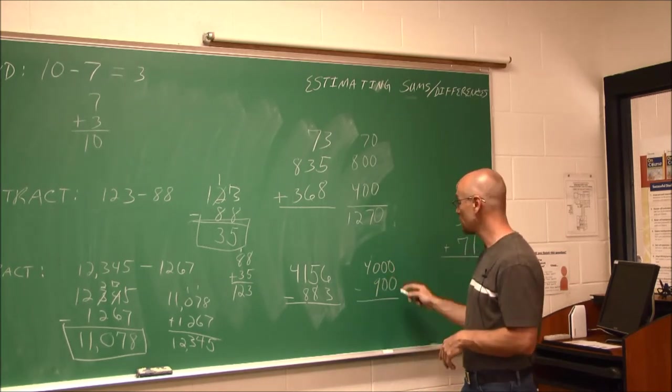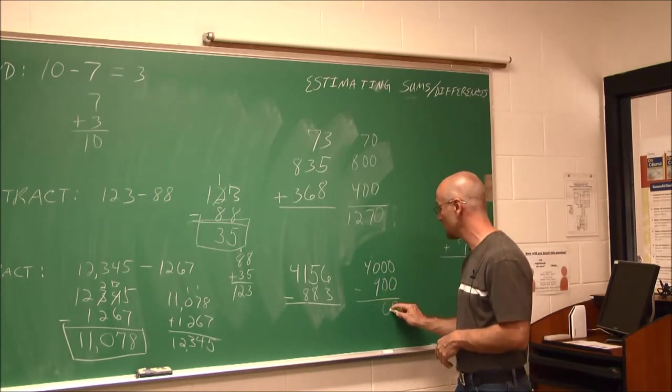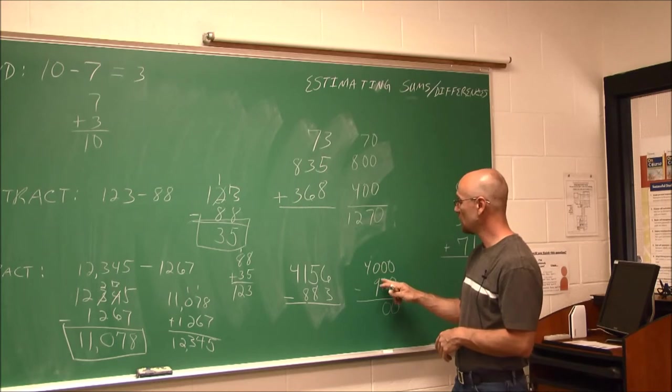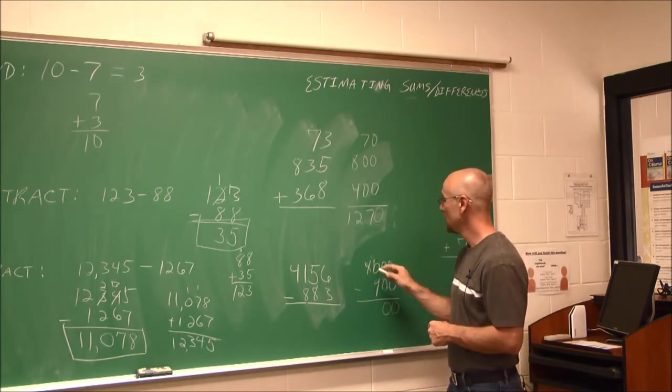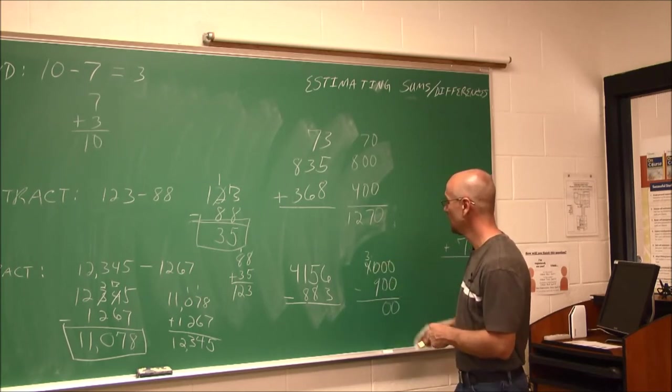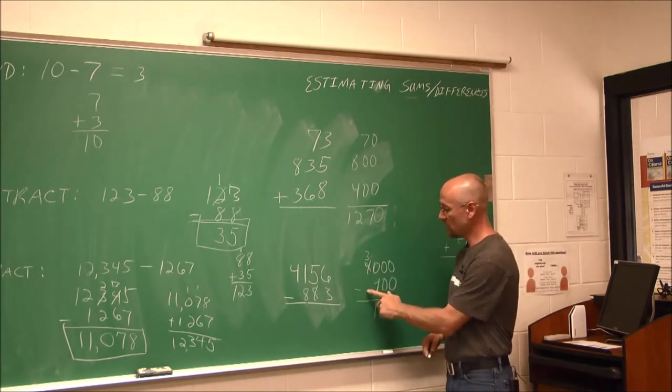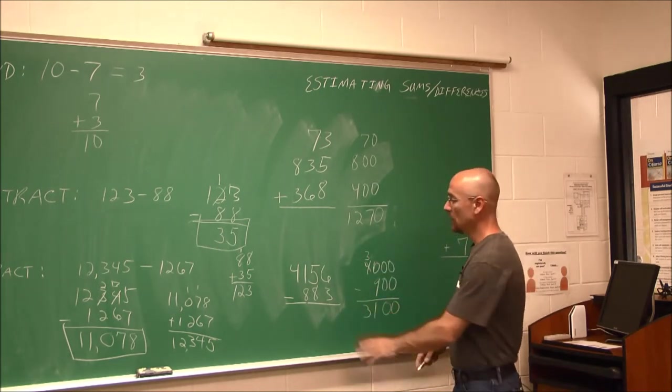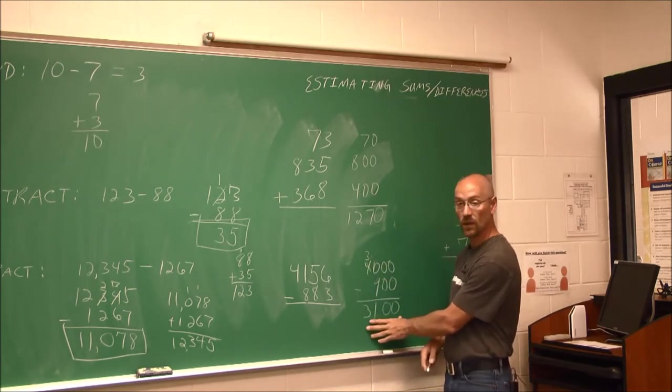Now we can find that subtraction. Well, 0 minus 0 is 0. 0 minus 0 is 0 in the tens place. 0 minus 9, well, we can't take 9 from 0, so we have to borrow, which let's leave that as a 3 and borrow 1. So we have 10 minus 9, which is 1. And 3 minus nothing is 3.